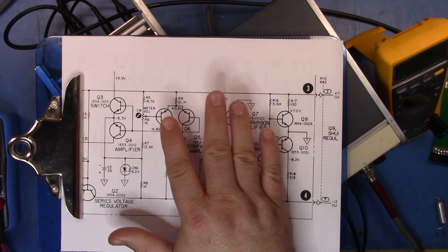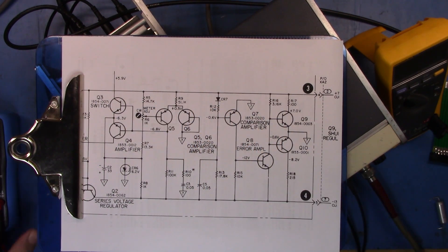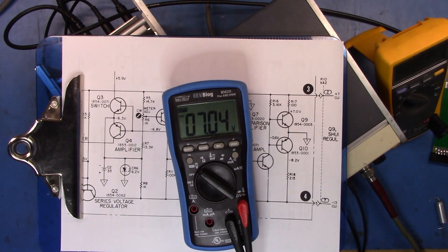Anyway, I popped that out and as we can see now when I replaced it, the 7 volt rail is now pretty much bang on 7 volts.